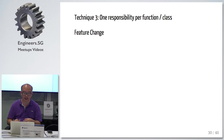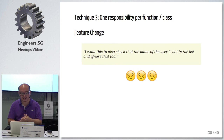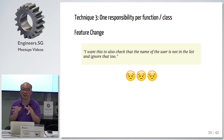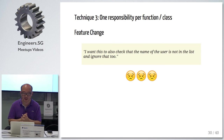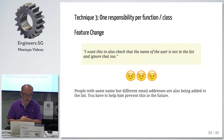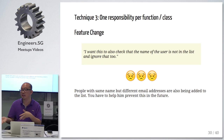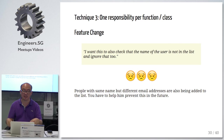Then after two months, the boss comes to you again and says: we're getting too many duplicates in the list — I want you to check the name also. I want you to check that the name is not already in the list. If it is, ignore it, because currently we have Anya and Kao all being duplicated. People with the same name but different email addresses are also being added to the list. They want to prevent this. So this is the feature change — the bug that has been filed.